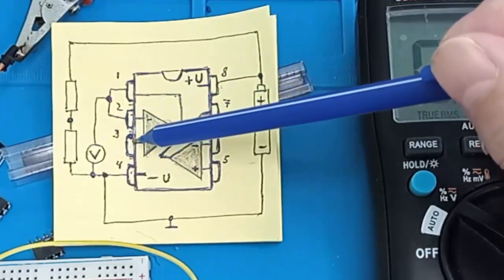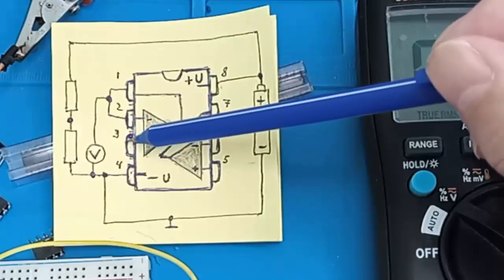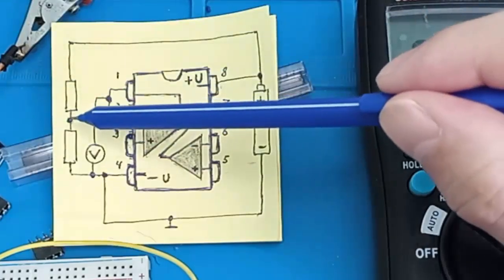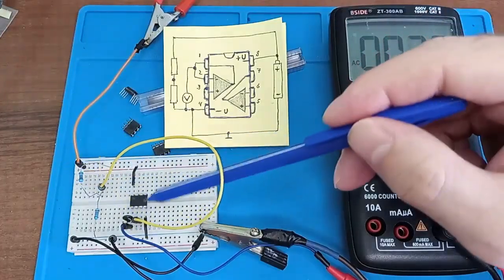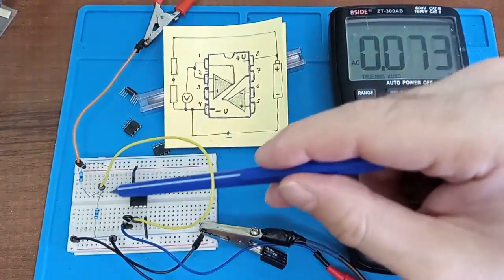The third pin is a non-inverting input. We will use it for testing. If we connect it to this point, where half the supply voltage is 2.5 volts, I have it connected with a yellow jumper.